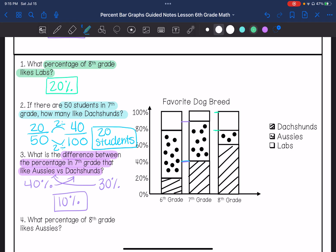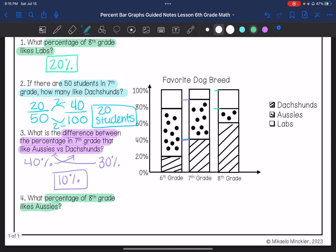What percentage of eighth grade likes Aussies? If we look at eighth grade, Aussies is from 60% to 80%, which is a difference of 20%.